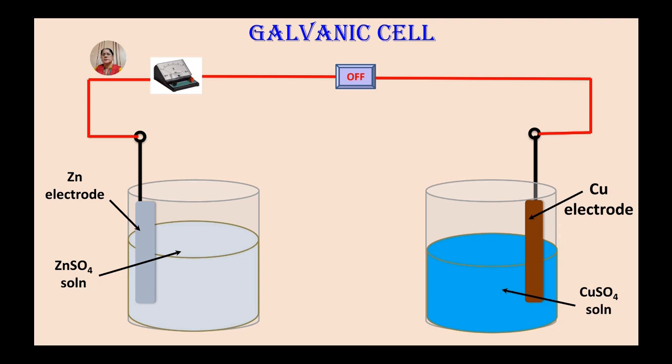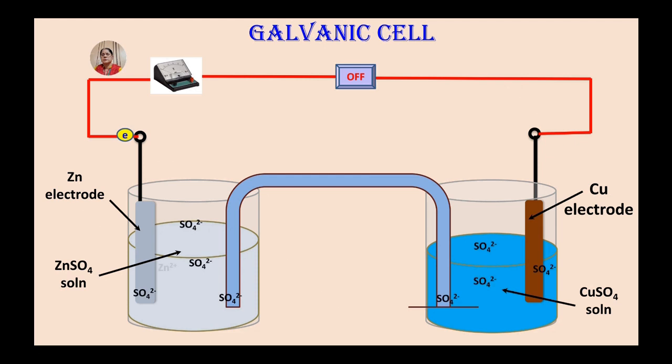Solutions in the two beakers are connected through an inverted U tube. This tube is known as a salt bridge. It contains saturated solution of strong electrolytes like potassium chloride, potassium nitrate etc. in agar-agar gel. The function of this salt bridge is to complete the circuit and to maintain electrical neutrality in the electrolytes.